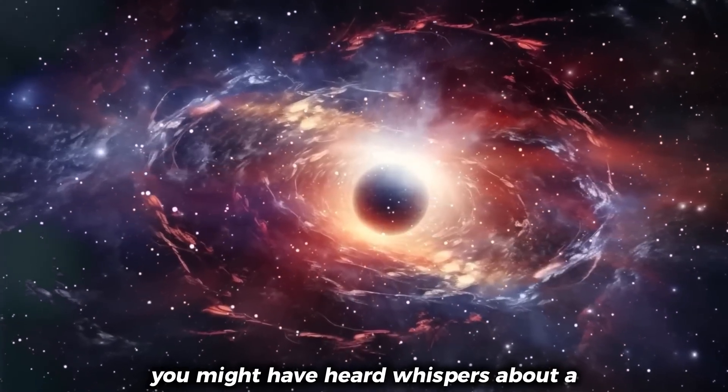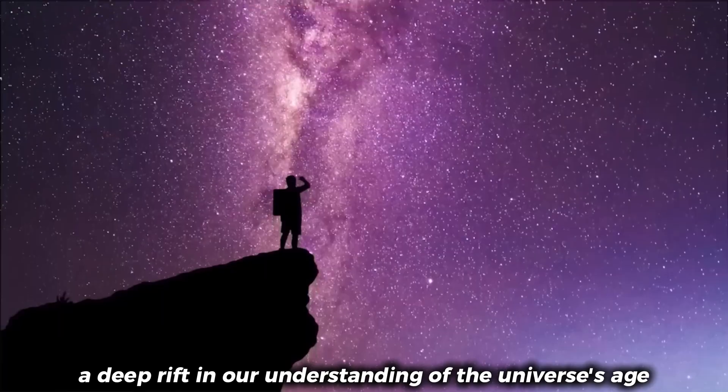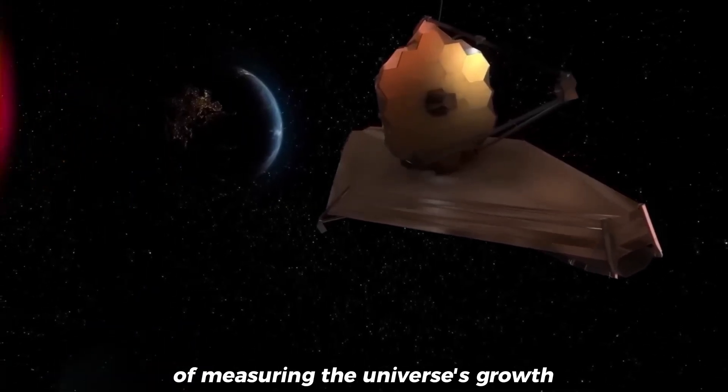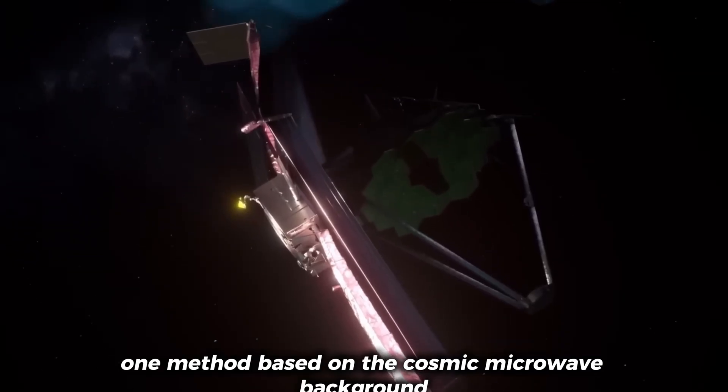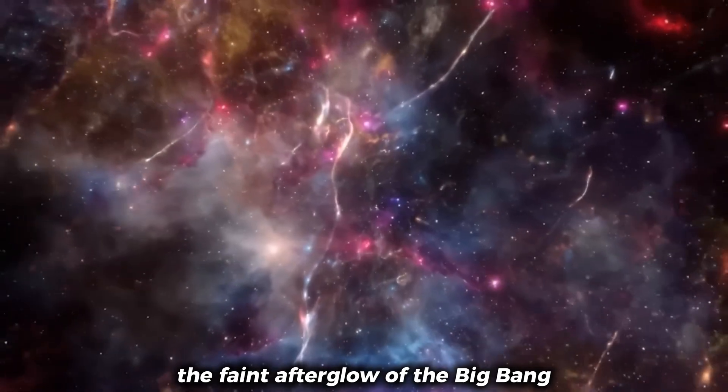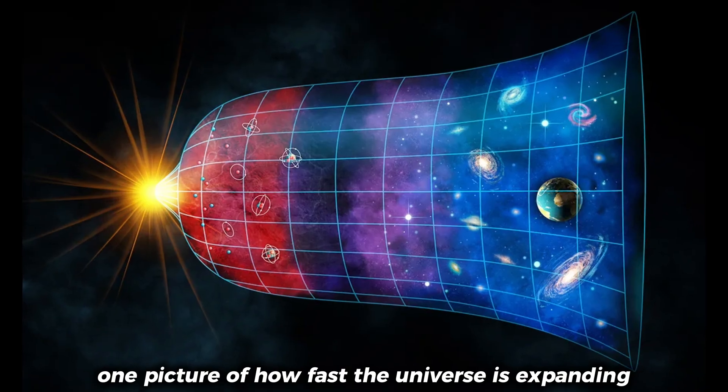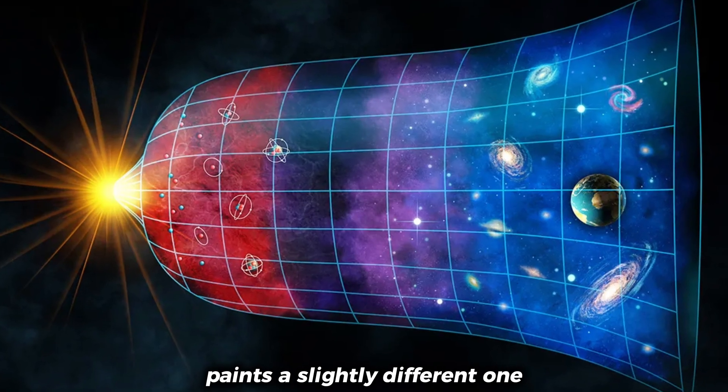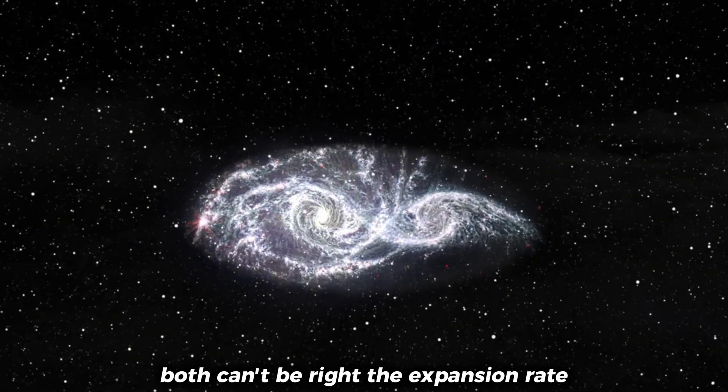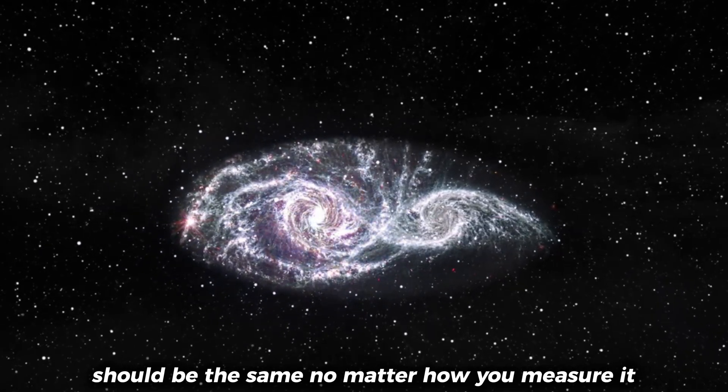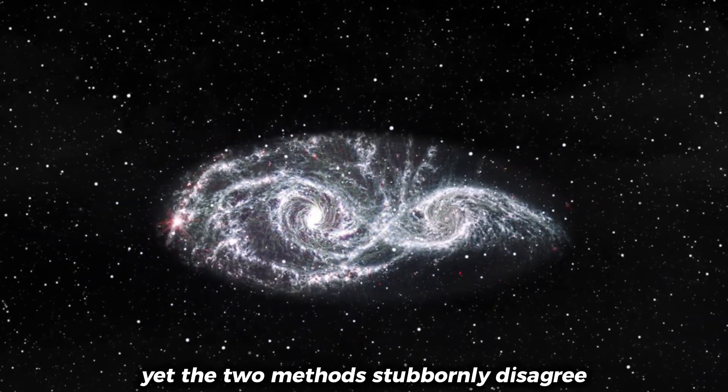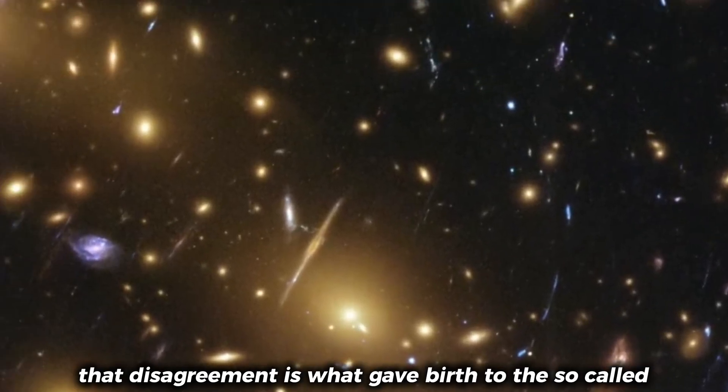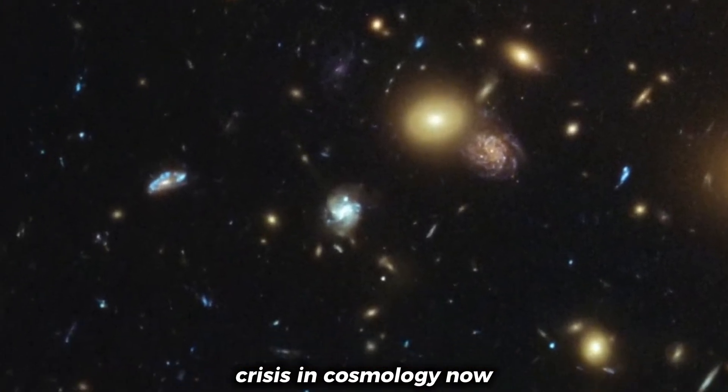You might have heard whispers about a crisis in cosmology, a deep rift in our understanding of the universe's age and expansion. It all started when different methods of measuring the universe's growth began giving contradictory results. One method, based on the cosmic microwave background, the faint afterglow of the Big Bang, paints one picture of how fast the universe is expanding. Another method, using distant supernovae as standard candles, paints a slightly different one. Both can't be right. The expansion rate, known as the Hubble constant, should be the same no matter how you measure it. Yet the two methods stubbornly disagree, and the gap between them, what scientists call the Hubble tension, refuses to close. That disagreement is what gave birth to the so-called crisis in cosmology.